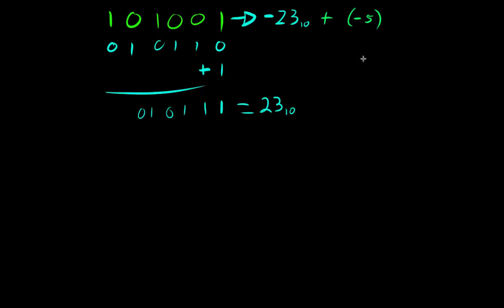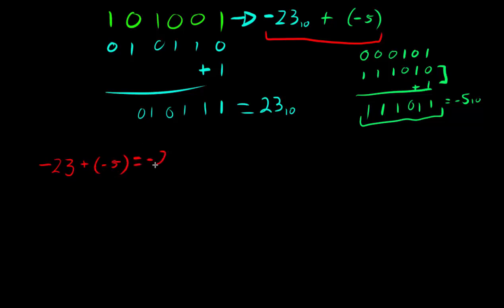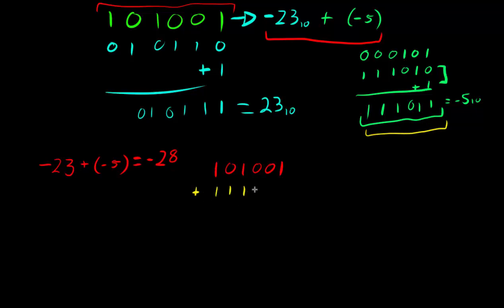To get negative 5 in 6-bit 2's complement: take 0 0 0 1 0 1, flip all bits to get 1 1 1 0 1 0, then add 1 to get 1 1 1 0 1 1. That is our representation of negative 5. Now let's calculate negative 23 plus negative 5. We add 1 0 1 0 0 1 and 1 1 1 0 1 1.